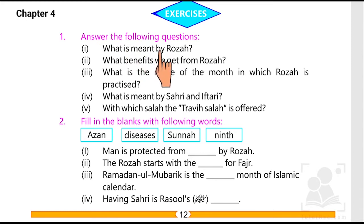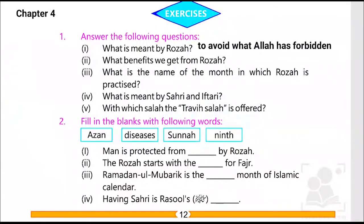If you remember kids, Roza is basically an important rukun of Islam, or pillar of Islam, which means to avoid what is not accepted by Allah. Here is the answer: Roza means to avoid what Allah has forbidden.